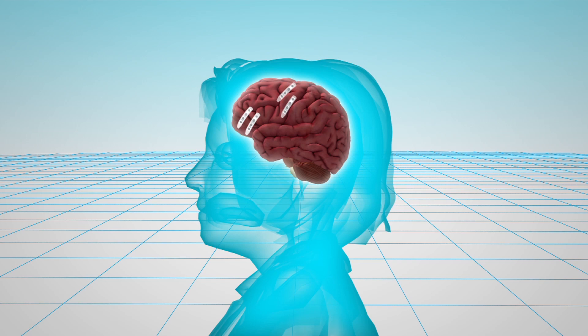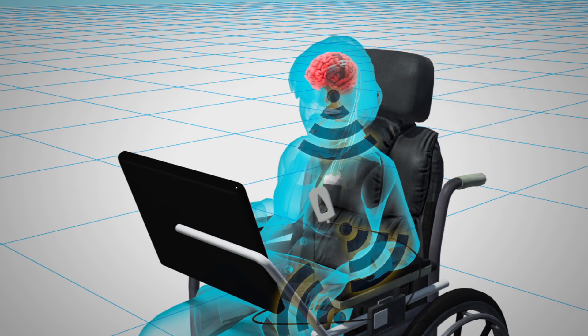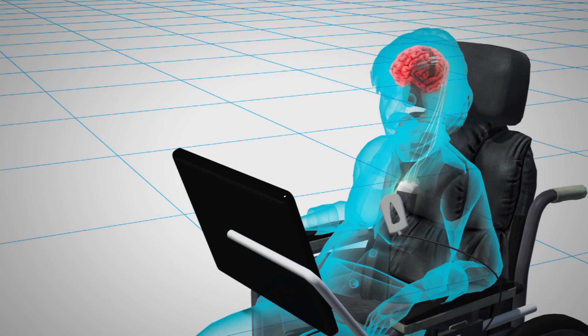If the patient's motor cortex degenerates over time, the backup electrodes placed over the left prefrontal cortex will be activated. To control these electrodes, the patient has to count backwards, as this region is responsible for mental calculation.